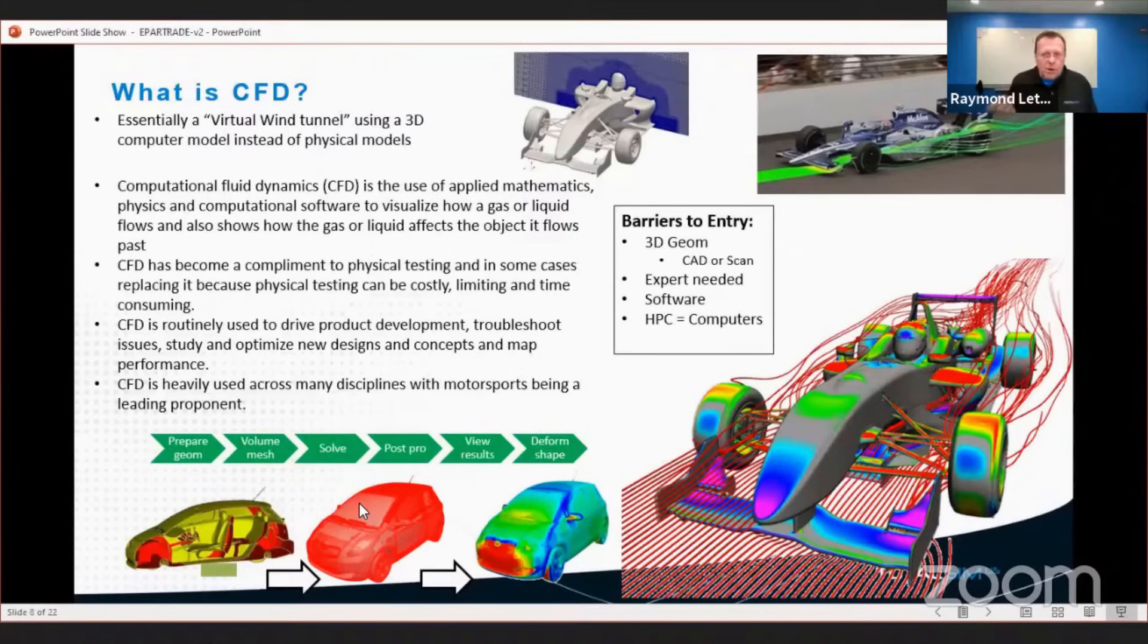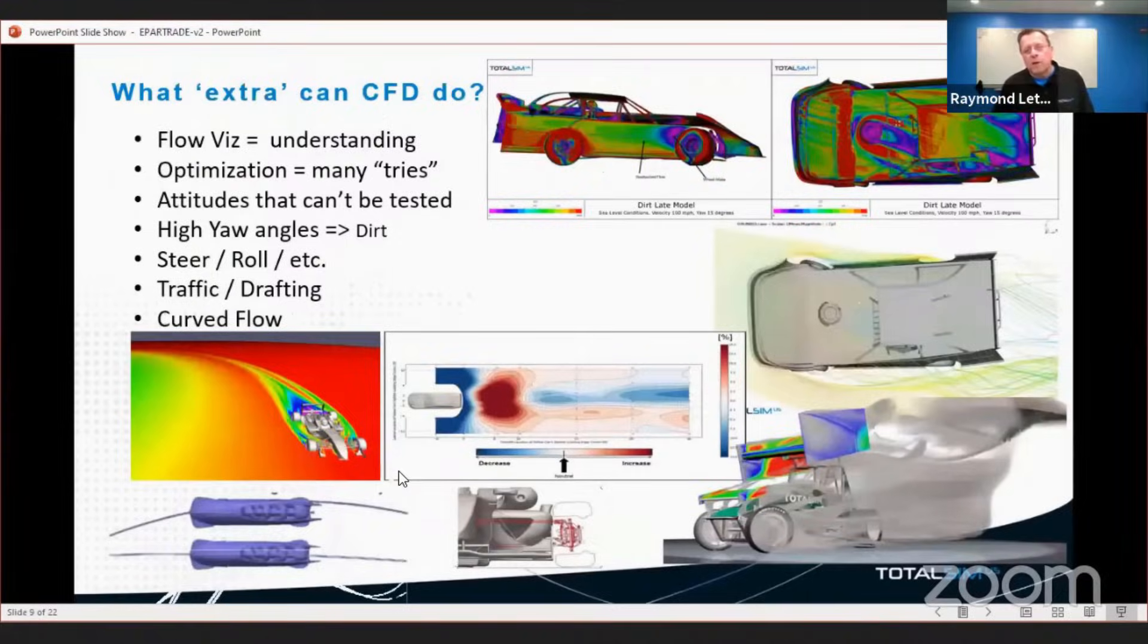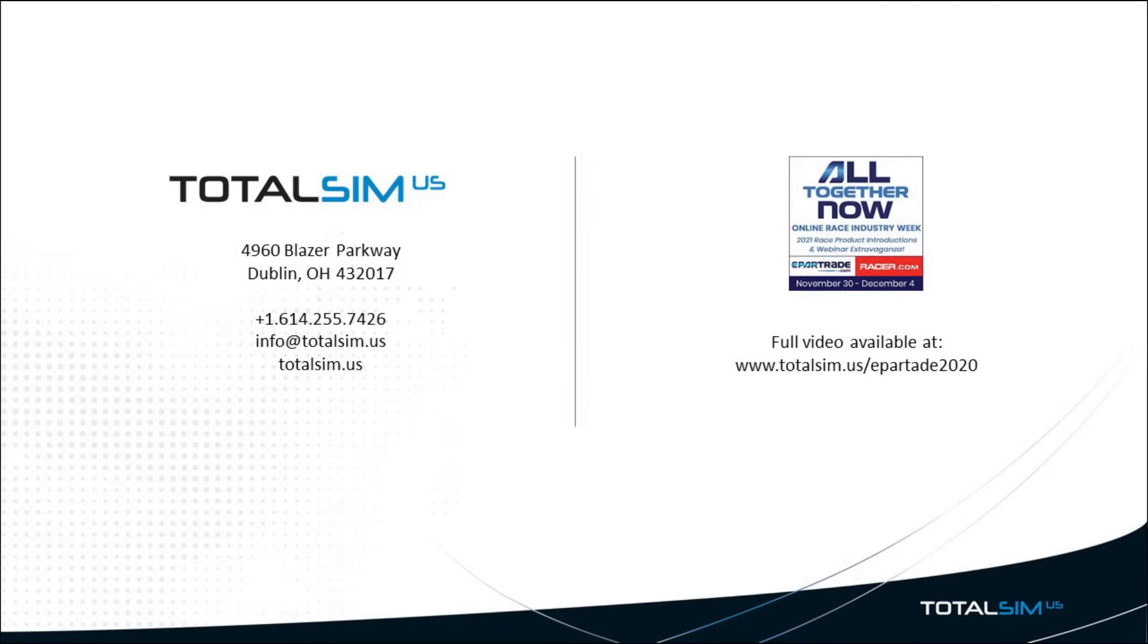And each of those cores typically cost about $0.05 per hour to rent or operate. So not a cheap exercise. But again, keep it in perspective with running the real race car.